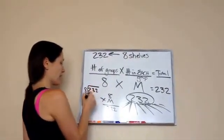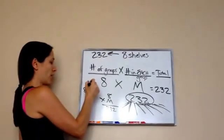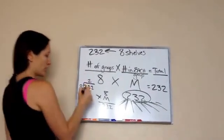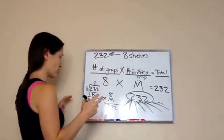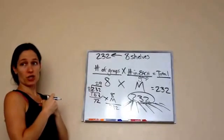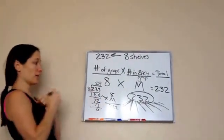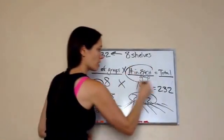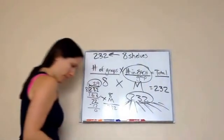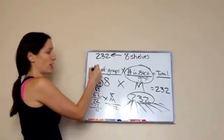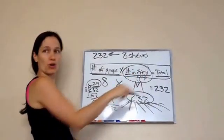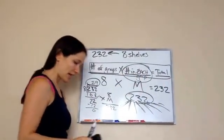So let's do that: 232 divided by eight. Eight goes into 23 two times, because eight times three is 24 which would go over. Bring down the two. Eight times nine is 72, so we end up getting 29. So how much does each shelf have? 29 books — very good! So it's very important that you know this equation pattern so you'll know where to put the M. That is lesson 15.